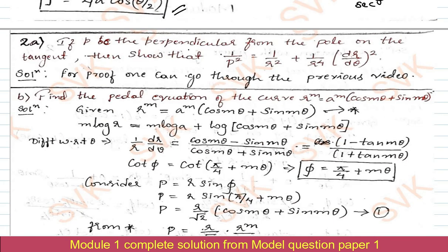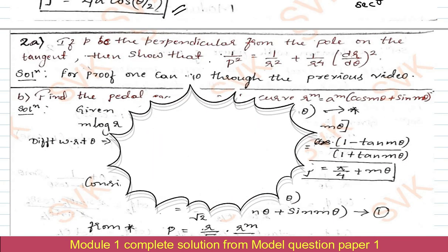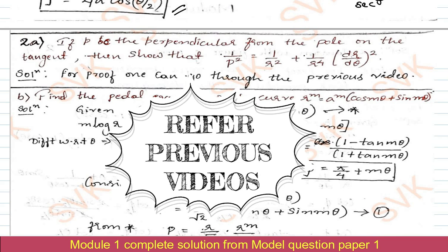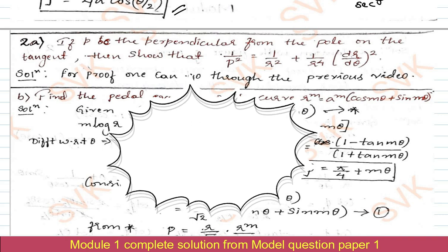Moving on to choice question 2a: if p is the perpendicular from the pole to the tangent, show that 1/p² = 1/r² + (1/r⁴)·(dr/dθ)². All these standard proofs have been derived separately; the video link is provided in the description. You can also refer to previous years' model question paper solutions in my previous videos.